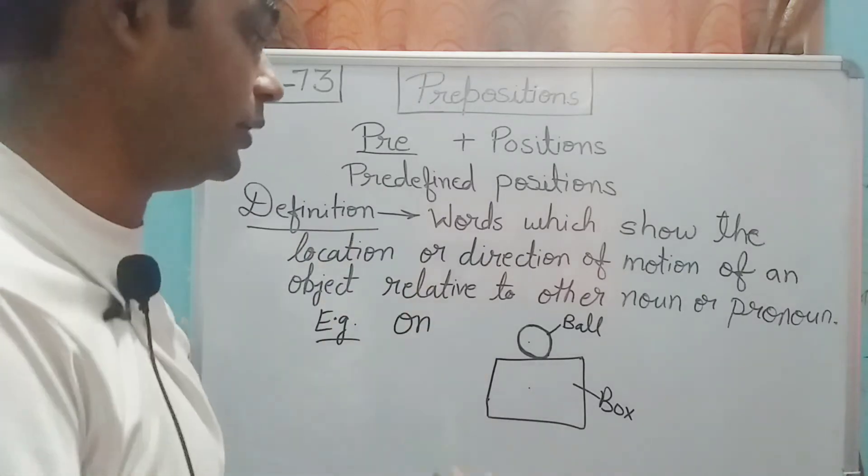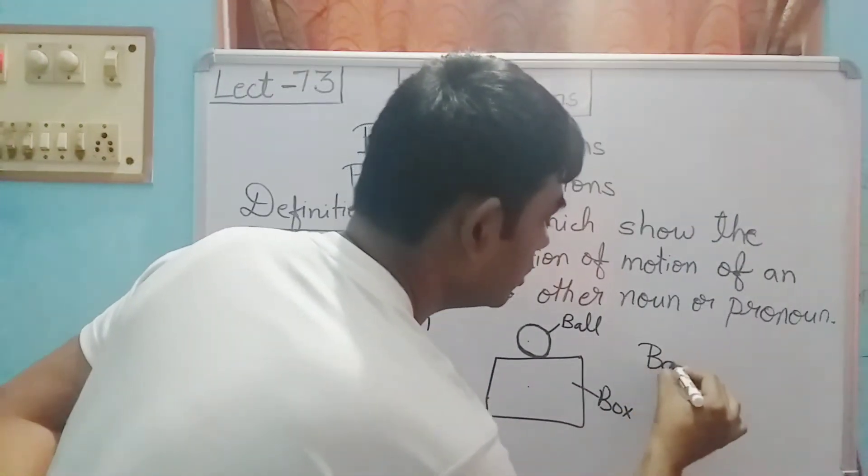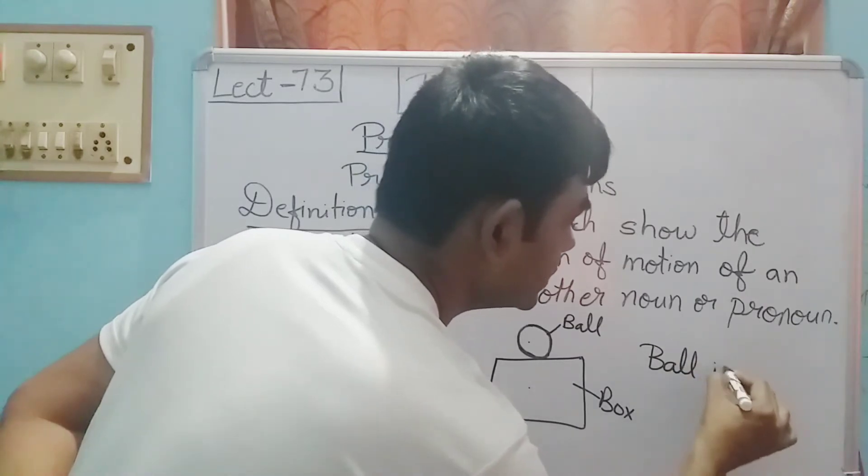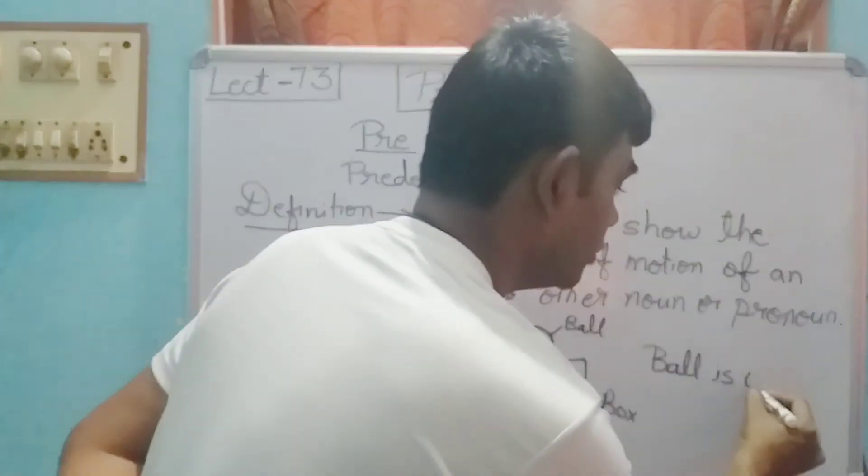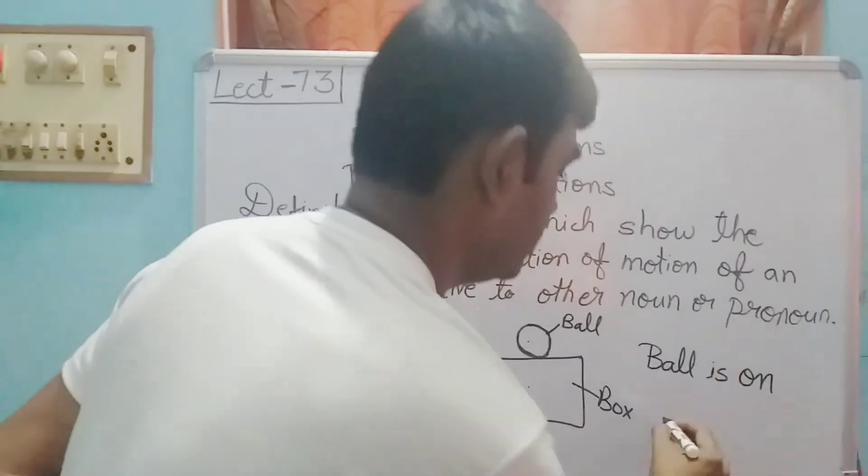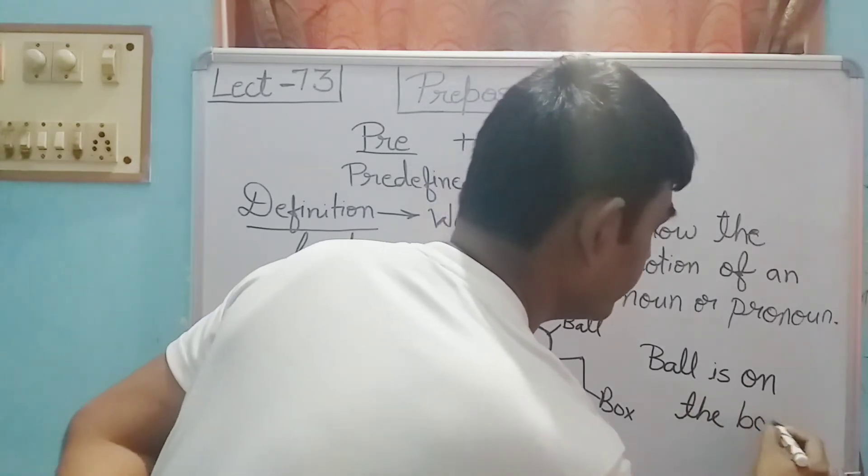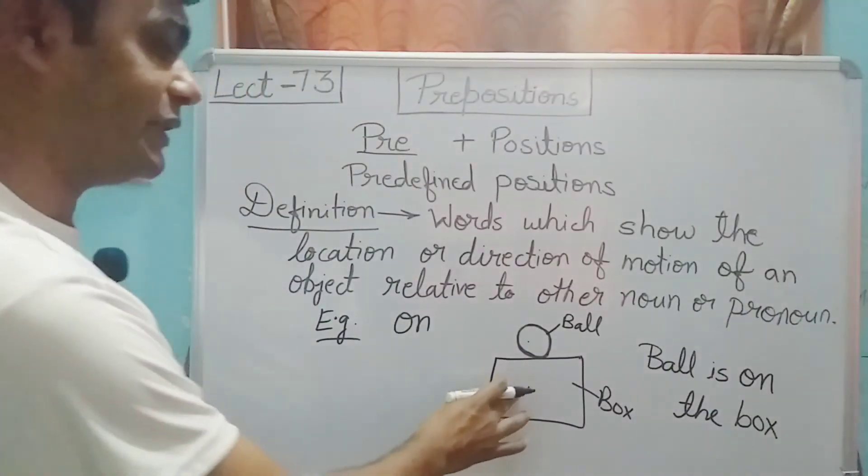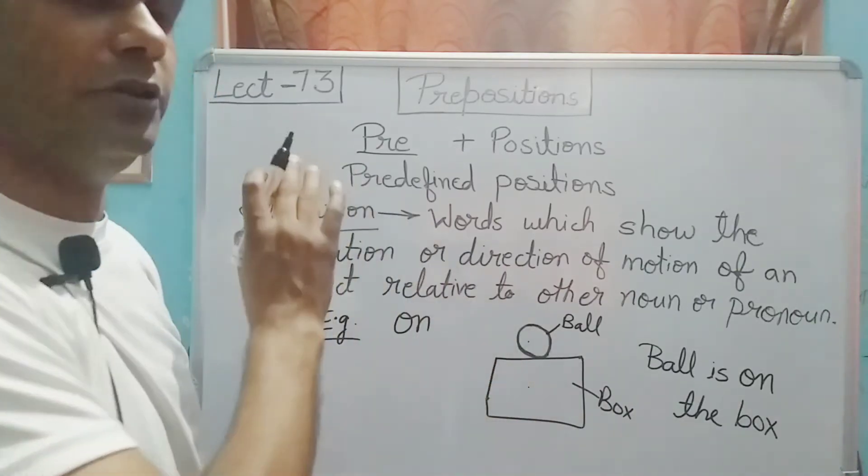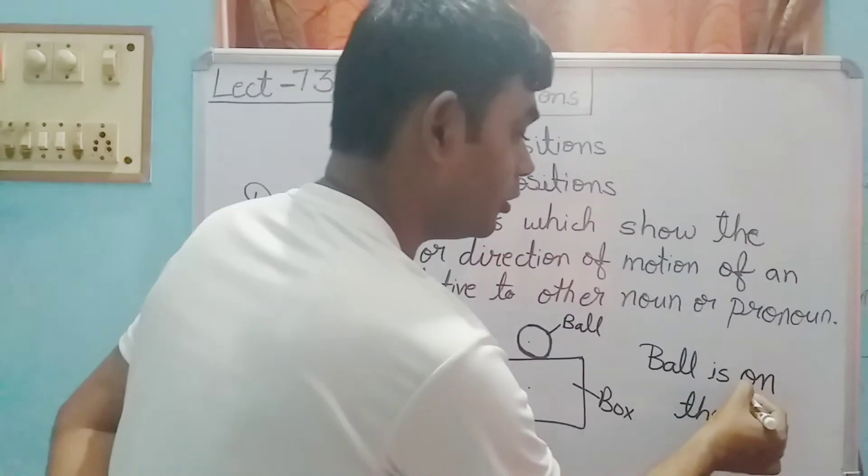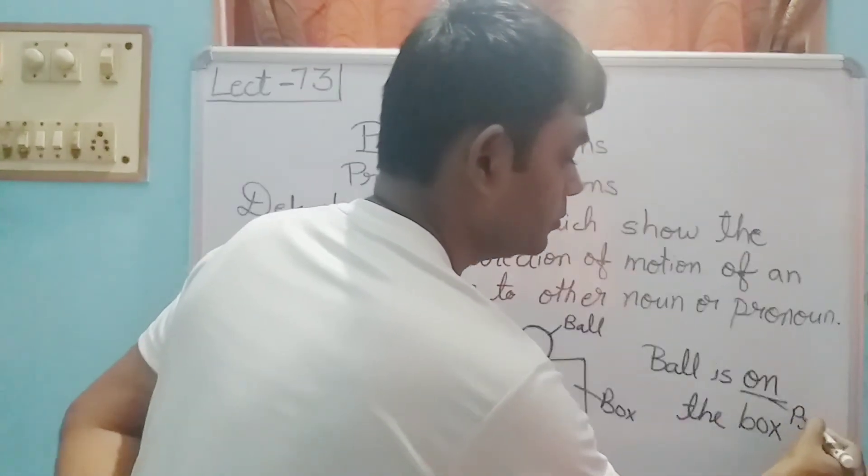Which position the ball is in? We will write: ball is on the box. So in respect to the box, where is the ball? It is on the box. So here we have used 'on' as a preposition.